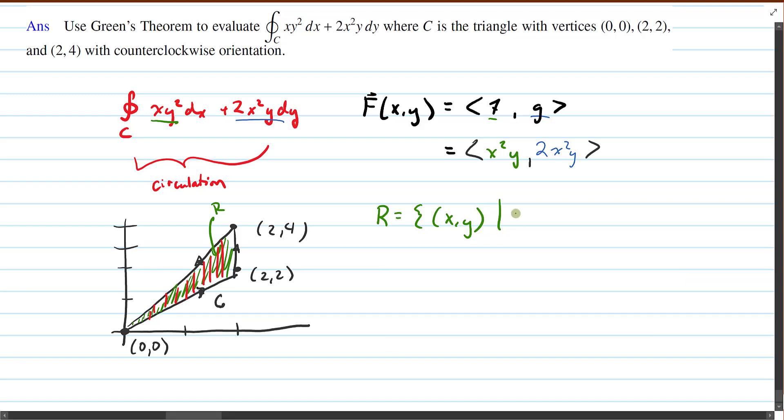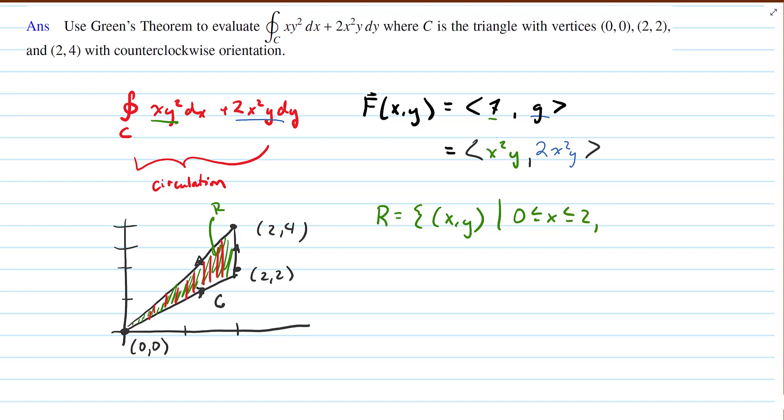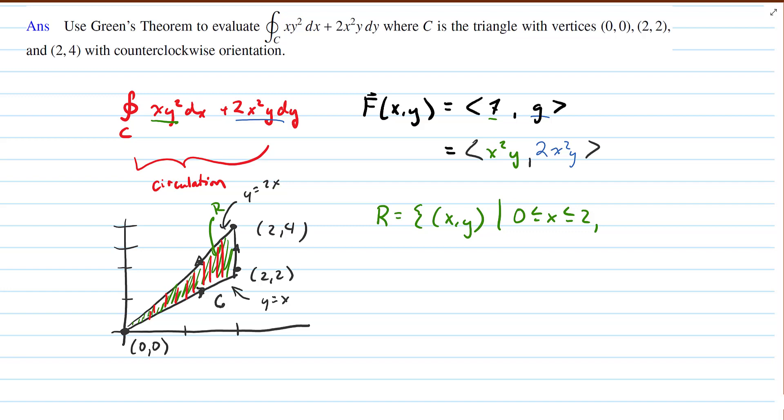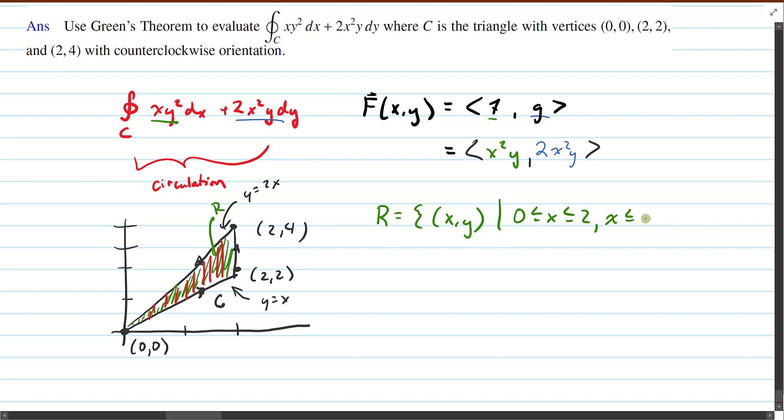So instead, let's think about integrating with respect to x, where as we move along here, the lower limit and the upper limit, those lines never change. So describing this region, we would say this is going to be for x between 0 and 2. And our y values are bounded by these two lines. This is the line y = x, and this is the line y = 2x. So our y values are bounded between them, and we'd have x ≤ y ≤ 2x.